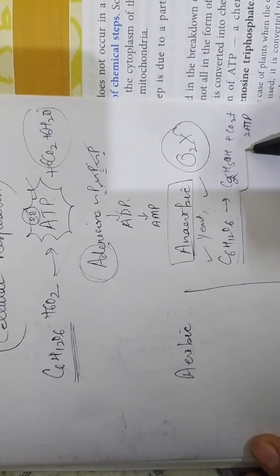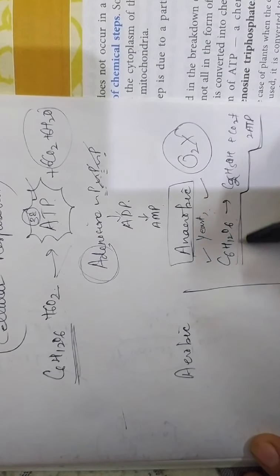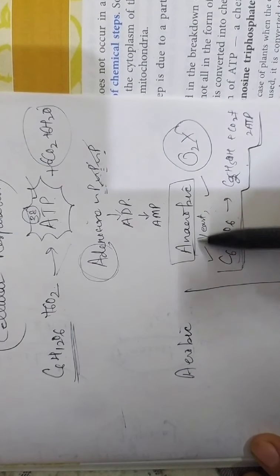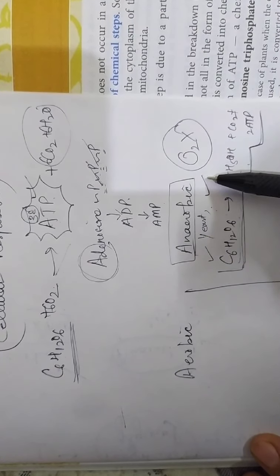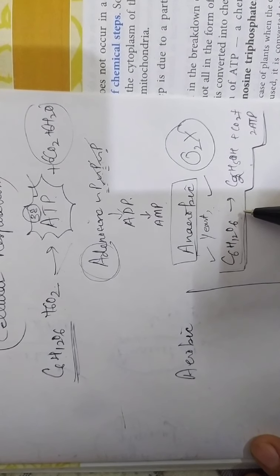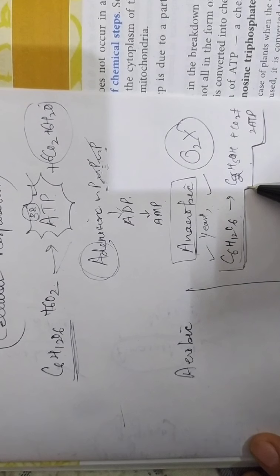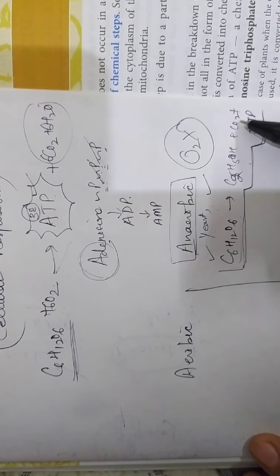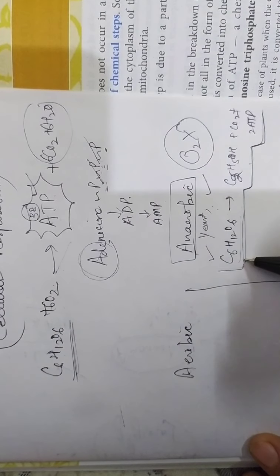This process takes place in plants, in germinating seeds, and also takes place in yeast and certain bacteria. So this is incomplete breakdown of glucose. And since it does not require oxygen, this process takes place inside the cytoplasm of all the cells.